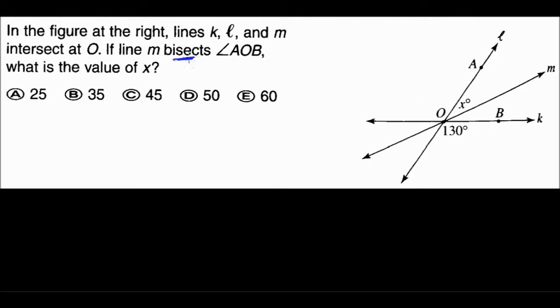If line M bisects—new word, bisects—angle AOB, we need to know how to read this. What is the value of X? So the question is asking the degree measure of X.